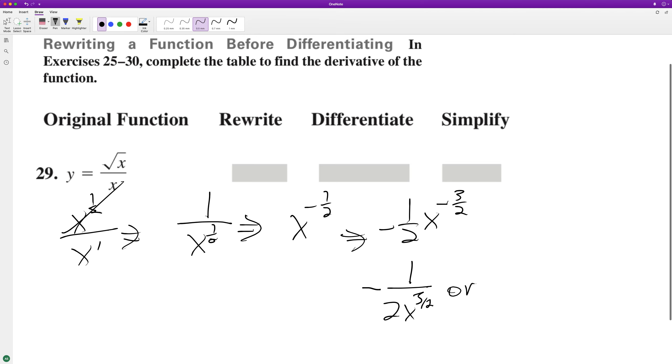Or negative 1, or quantity negative 1 over 2 square root of x cubed, but either way works, and that's it.